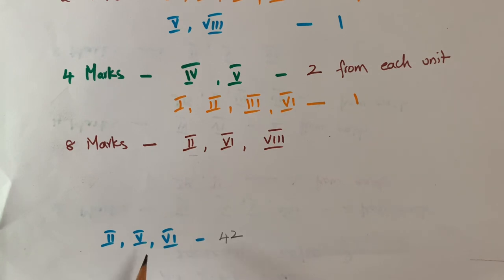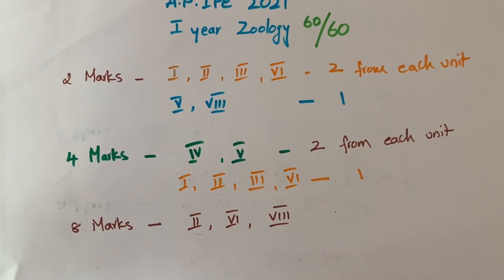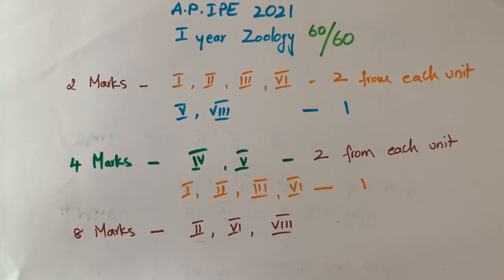The 2nd unit, 5th unit, and 6th unit, you can easily score 42 marks. So I hope you like this video and you know the weightage given to each chapter. So learn smartly.